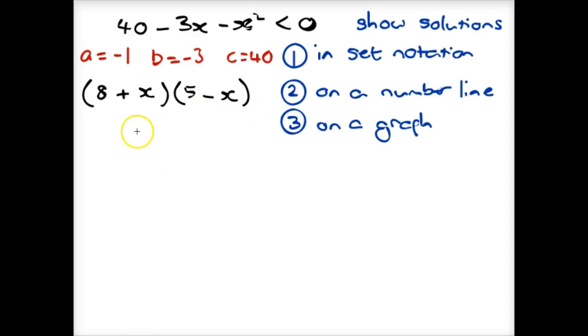So that would normally give us solutions if it was equal to 0 of x is minus 8 and x is 5. What that does mean is we know where it crosses the axes. So we're just going to move over to the graph.